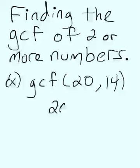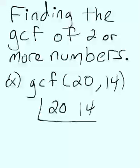So we start by writing our two numbers, 20 and 14. And then we'll write a division symbol, but we're going to write it upside down. And then we look at the two numbers and just find anything that goes into both of them. So in this case, they're both even, so I can divide by 2.